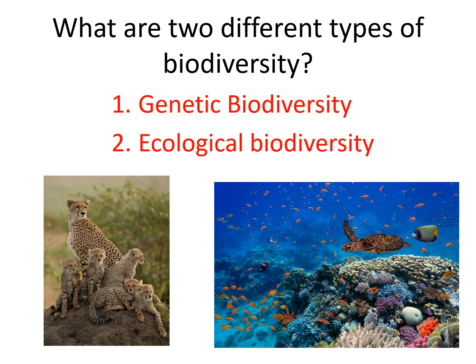Ecological biodiversity is when you have lots of different primary consumers, secondary consumers, and so on. If something kills off one of the producers, there are still other producers the organisms can eat. Or if something kills off one of the primary consumers, there's still other prey that the predators can eat.